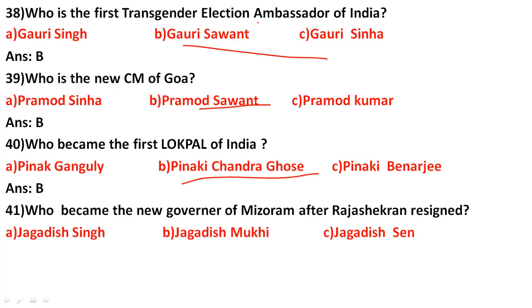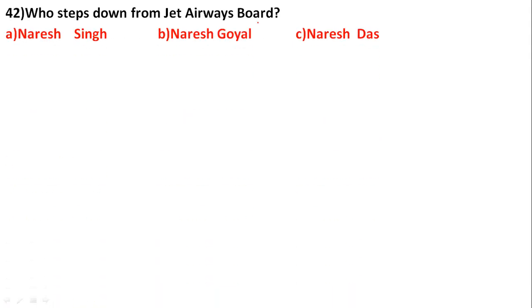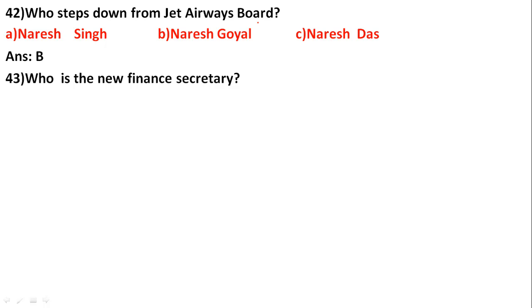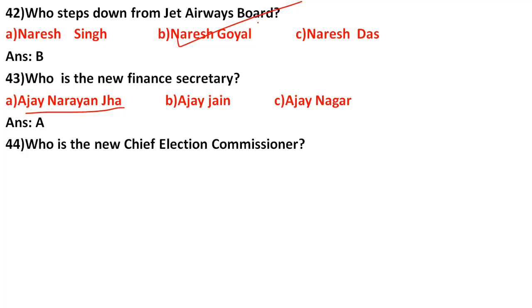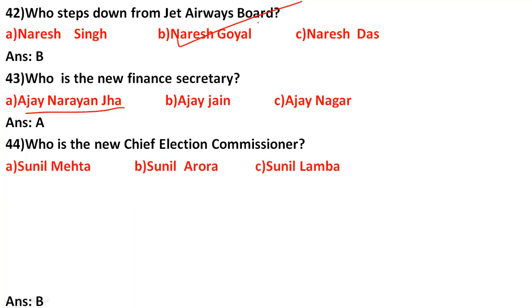Who is the new Governor of Mizoram after Rajashekharan's resignation? The correct answer is option B: Jagadish Mukhi, who was also the Governor of Assam. Who stepped down from the Jet Airways board? The correct answer is Naresh Goyal. Who is the new Finance Secretary of India? The correct answer is option A: Ajay Narayan Jha.